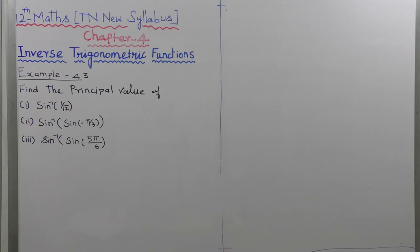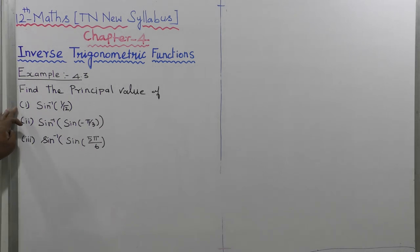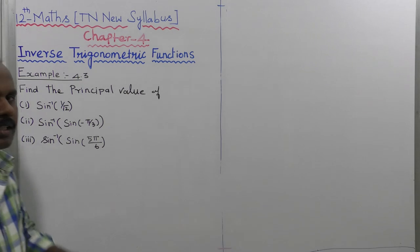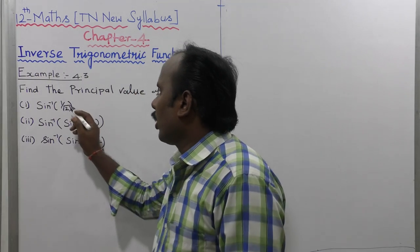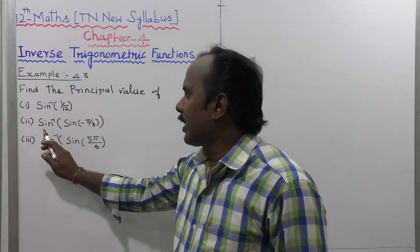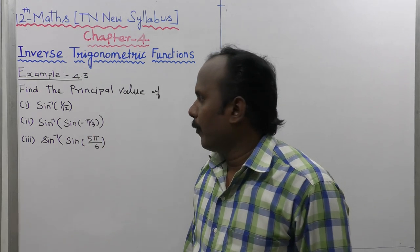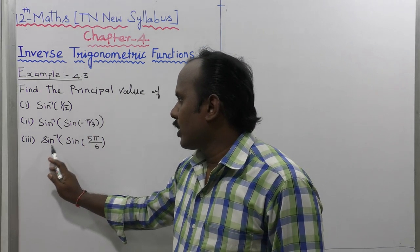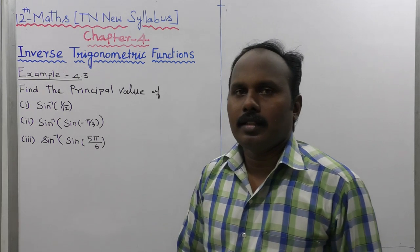Example 4.3. Find the principal value of: the first subdivision, sin inverse of 1 by root 2; the second subdivision, sin inverse of sin of minus pi by 3; and the third subdivision, sin inverse of sin of 5 pi by 6.